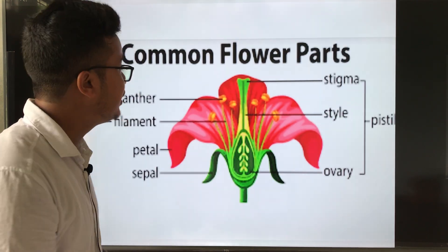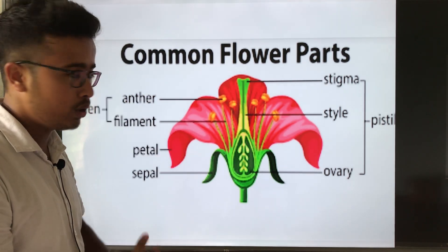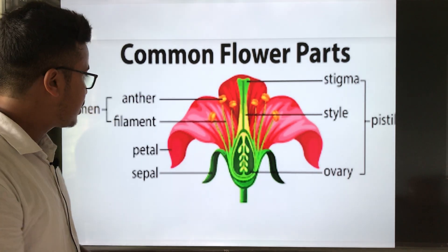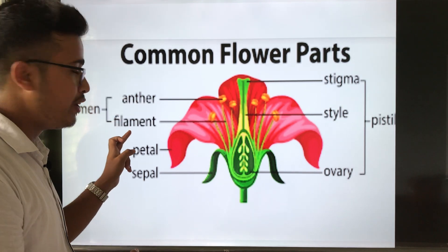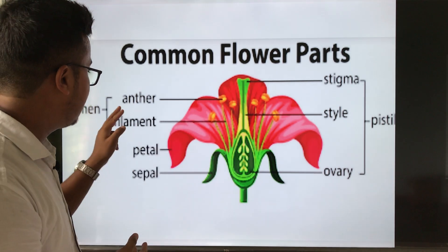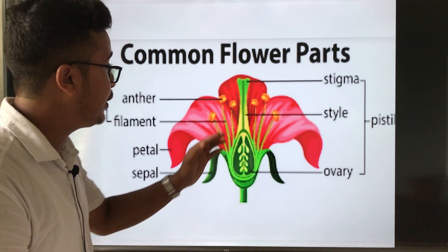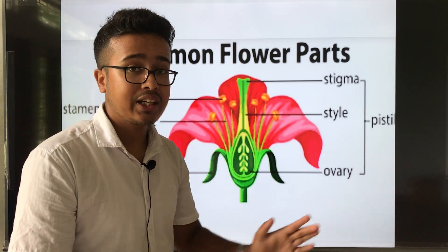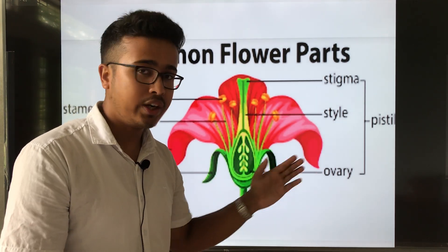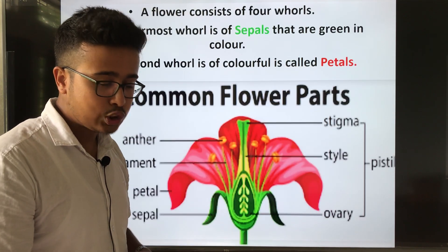Here are the different parts of a flower. You can see: here is the stamen, which consists of anther and filament. This portion is called the petal, and this portion is called the sepal. Here is the pistil, which consists of three parts: stigma, style, and ovary. We will learn more about these in the next topic.